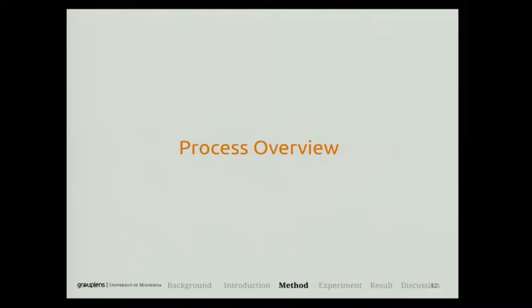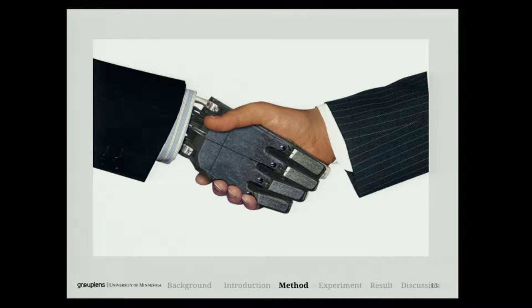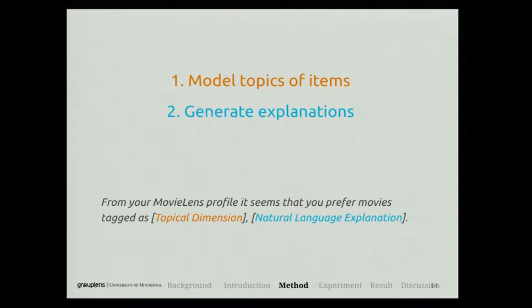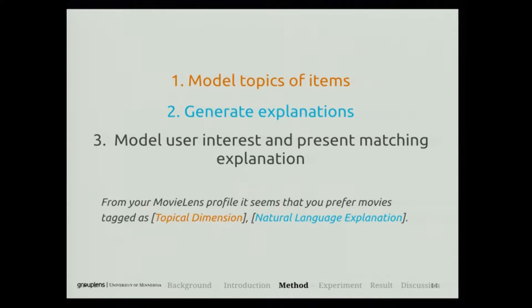So how did we generate this? On a very high level, the approach we took is mixed computation — we combine both the machine learning pipeline with crowdsourcing effort. The explanation has the following sentence structure: from your MovieLens profile, it seems that you prefer movies tagged as a key topic. The first step is to model the key topics of each item in our system. The second part is the natural language explanation, using a mixed computation approach. The third step is to model users' interests and present the matching explanation based on their history.